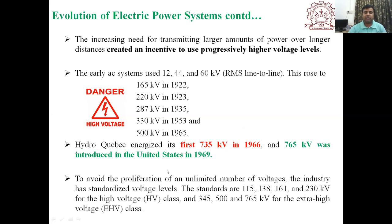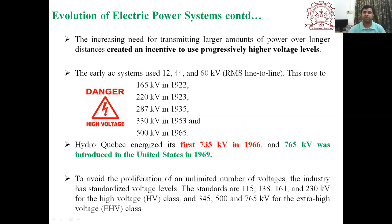To avoid an unlimited number of voltages, the industry standardized voltage levels. The standards are 115, 138, 161, and 230 kV for the high voltage class; 345, 500, and 765 kV for extra high voltage class; and beyond that for ultra high voltage. In the Indian context, high voltage lines are 33 kV, 66 kV, 132 kV, and 220 kV; extra high voltage lines are 400 kV and 765 kV; and beyond that is ultra high voltage.